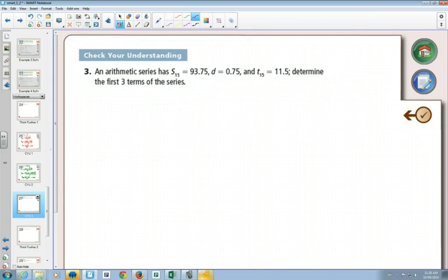So a couple things here. We've got some information, we've got some formulas. It tells us a sum, so I know that I have two formulas for sums. What I want to find out is, is there enough information here with either of the formulas to figure something out?